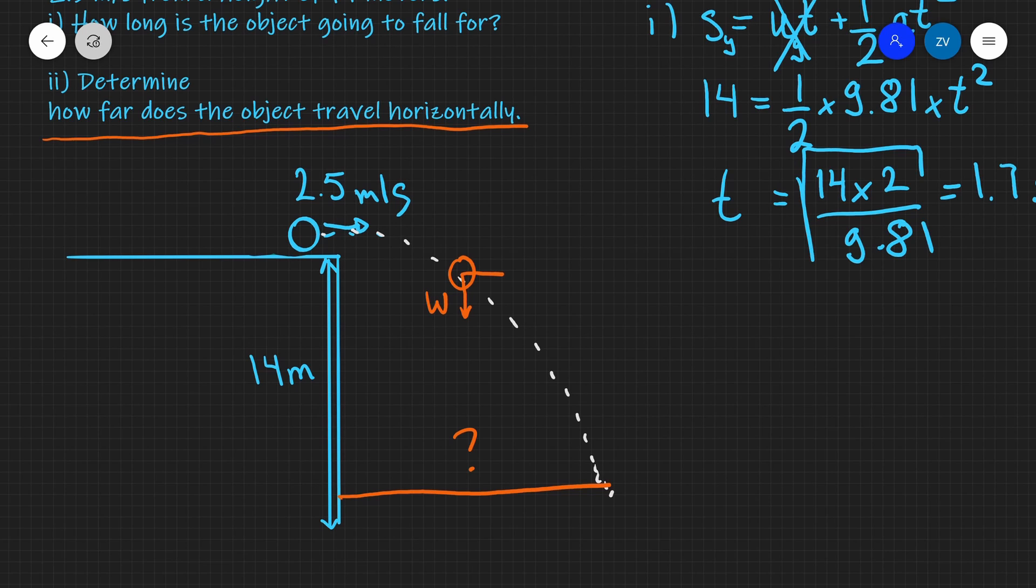So at this point the object will be moving at two and a half meters per second. At this point over here it will be moving horizontally at two and a half meters per second. Even when it lands it will still be moving at two and a half meters per second horizontally.